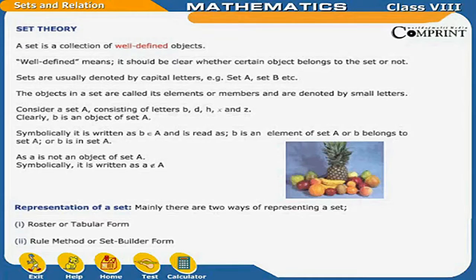The objects in a set are called its elements or members and are denoted by small letters. Consider a set A consisting of letters B, D, H, X and Z. Clearly, B is an object of set A. Symbolically, it is written as B belongs to A and is read as B is an element of set A, or B belongs to set A, or B is in set A. As A is not an object of set A, symbolically it is written as A does not belong to A.